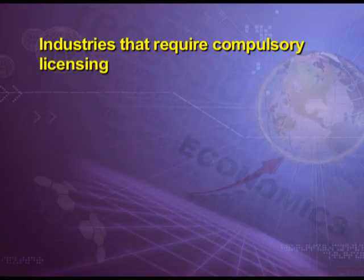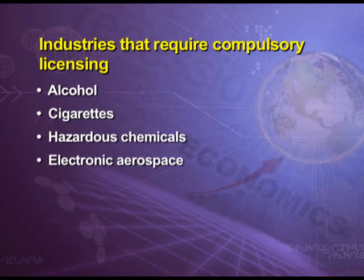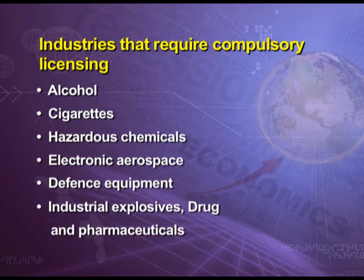At present there are only 6 industries which need compulsory licensing, and these are health and safety related. These are: alcohol, cigarettes, hazardous chemicals, electronic aerospace, defense equipment, industrial explosives, and drugs and pharmaceuticals. That is, if you want to industrialize in these 6 areas, you have to take a compulsory license.